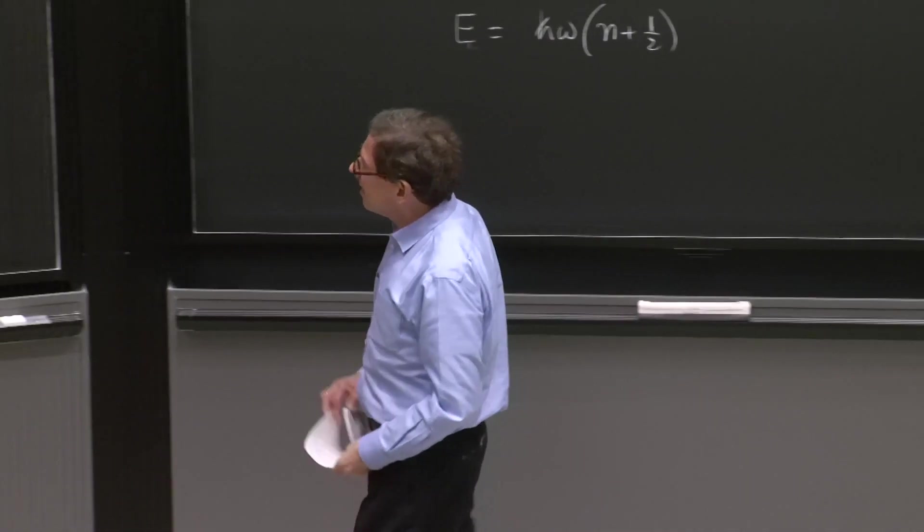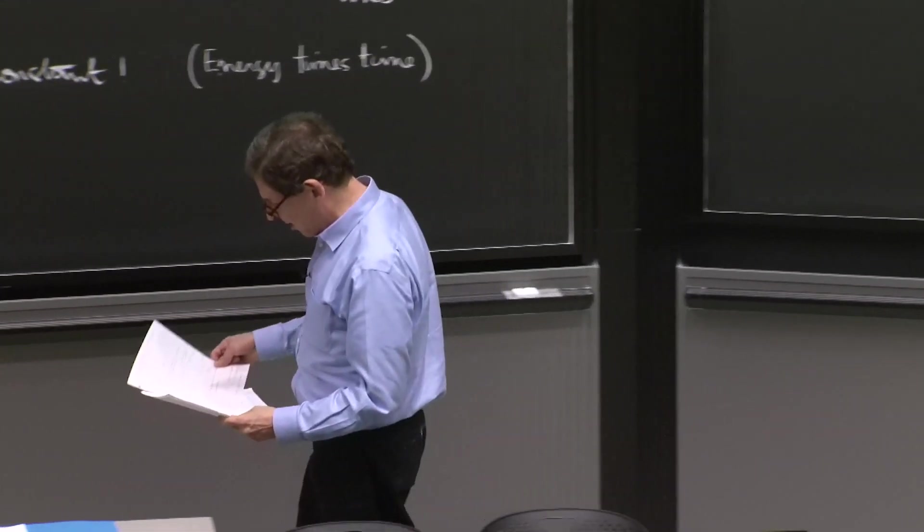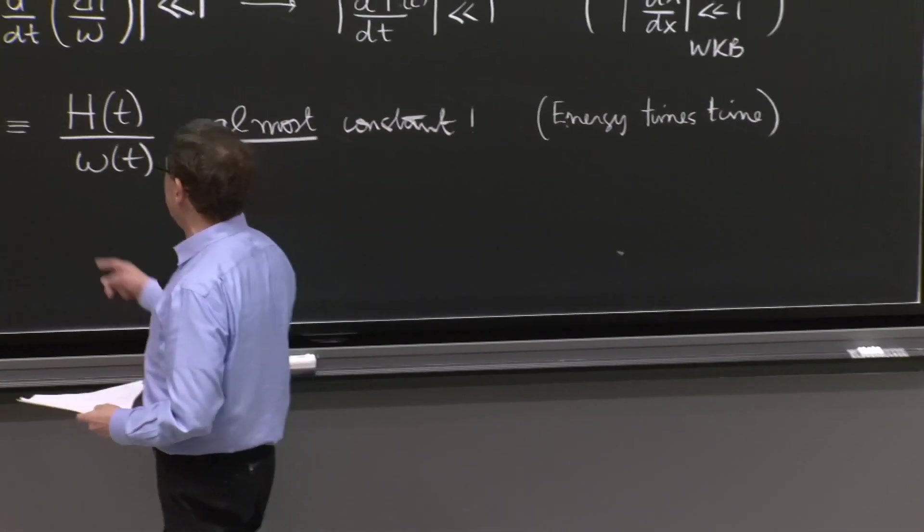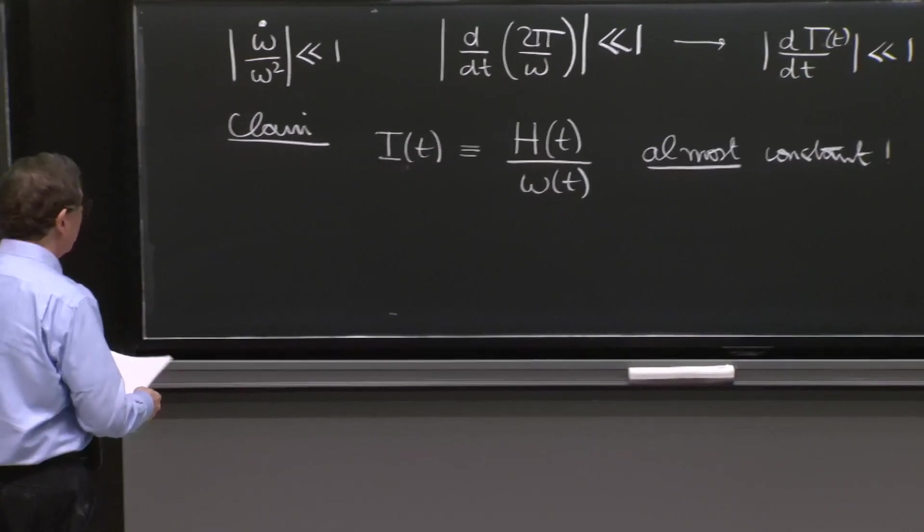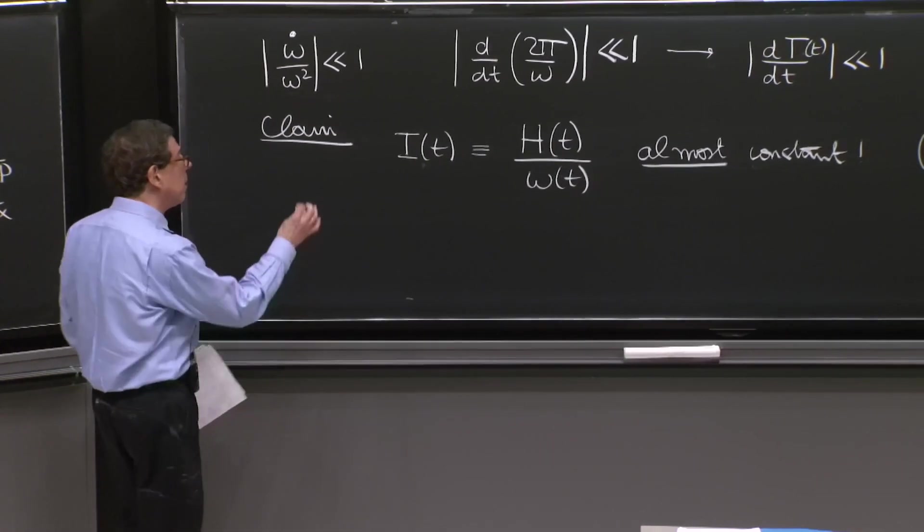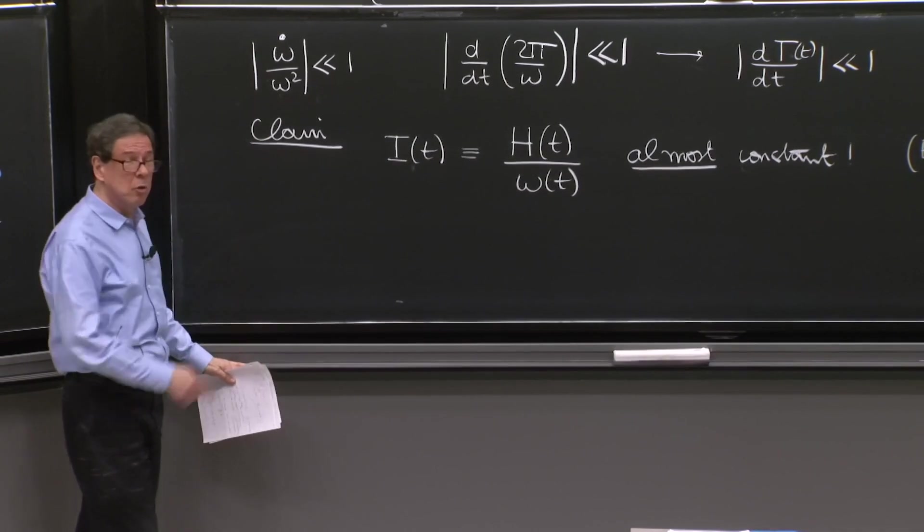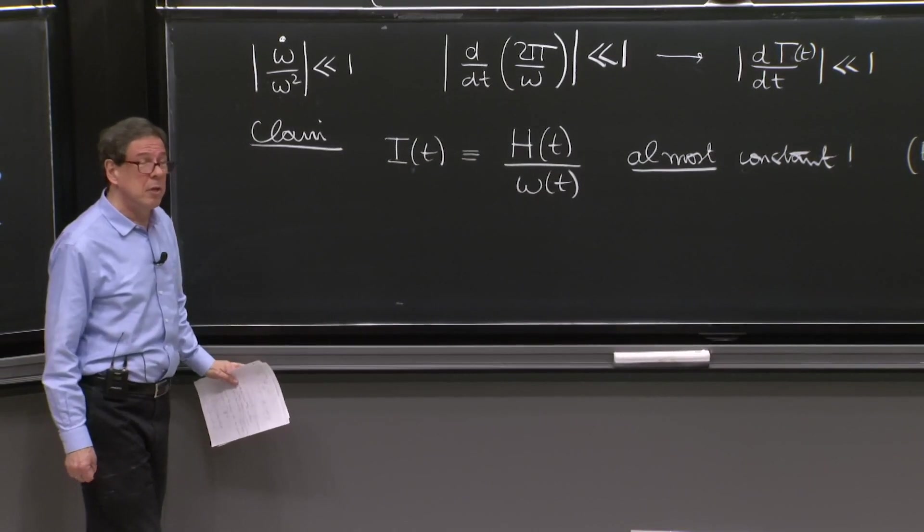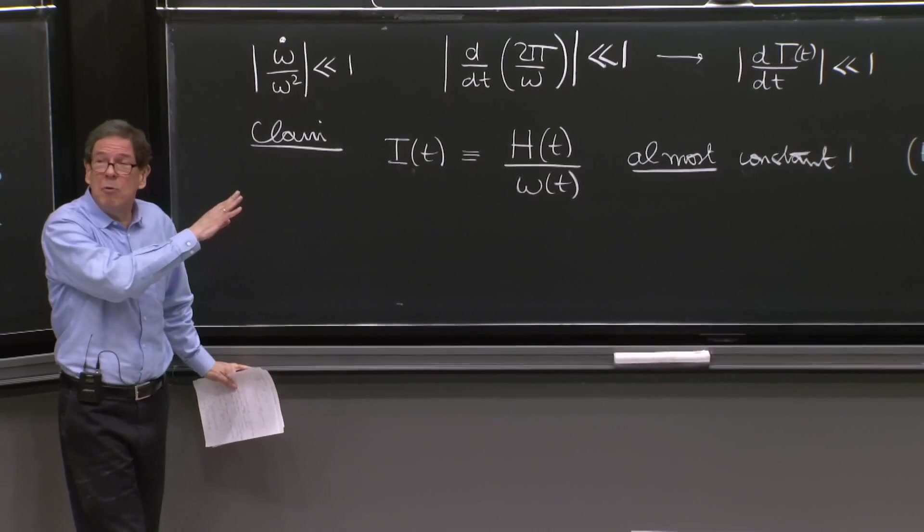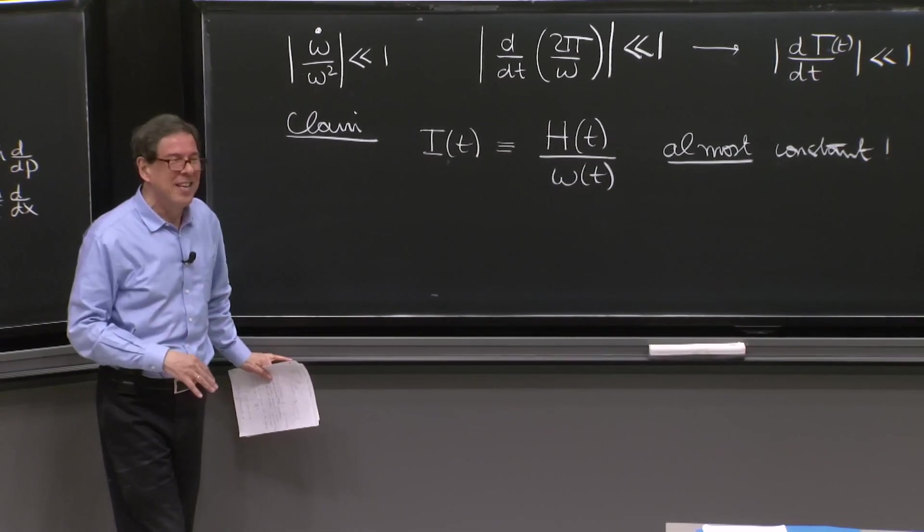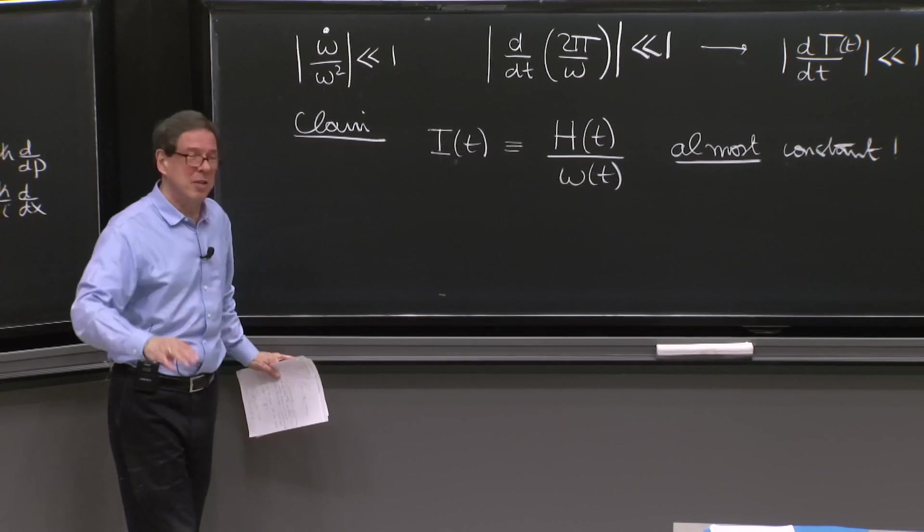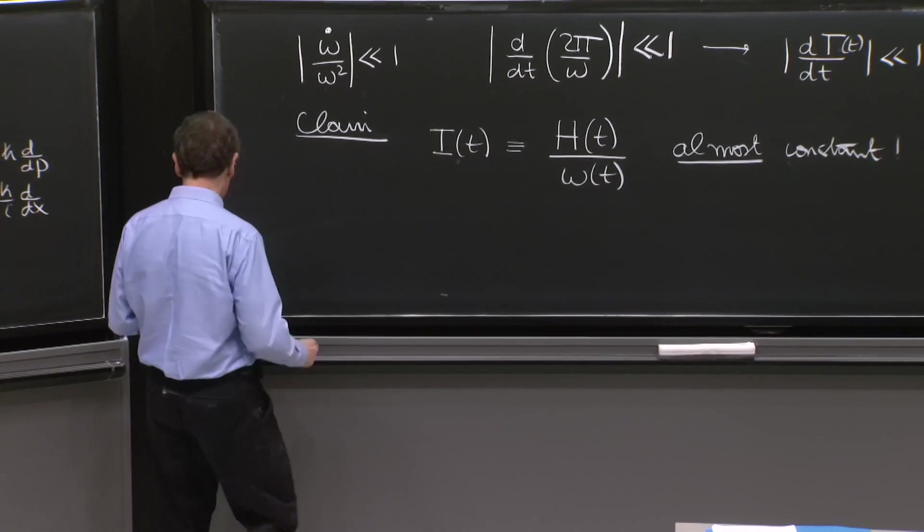So let's look at that. So the claim is that the name I is for adiabatic invariant. And we can verify it or get some intuition as to why it goes very slowly. Now I cannot prove that thing doesn't change. That would be too much. But it's going to change very slowly. You will appreciate that.